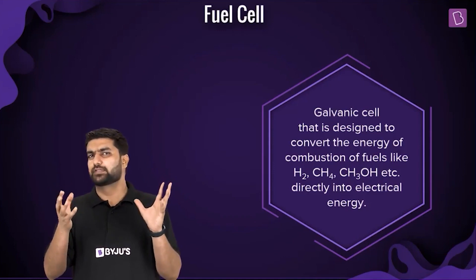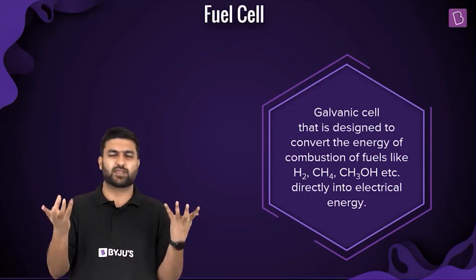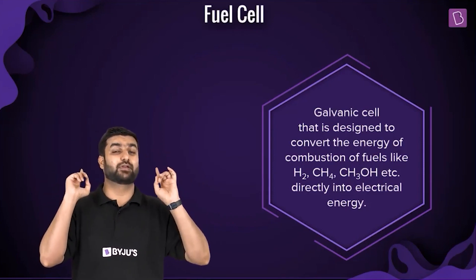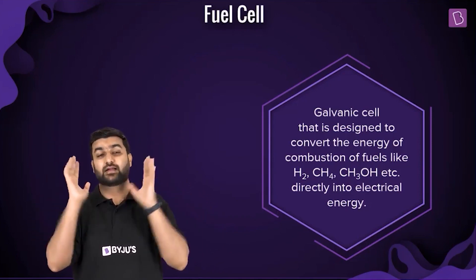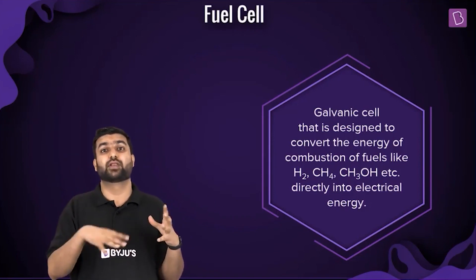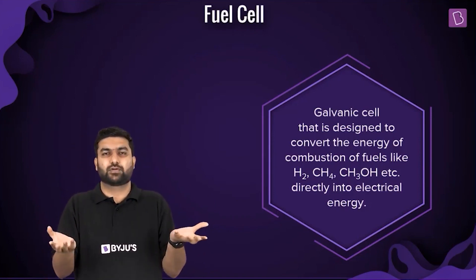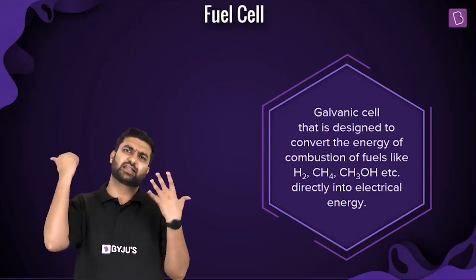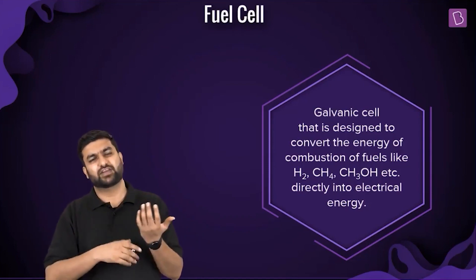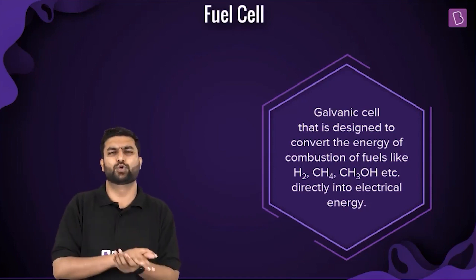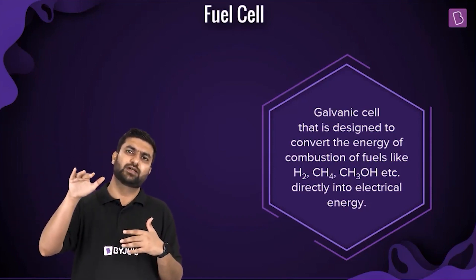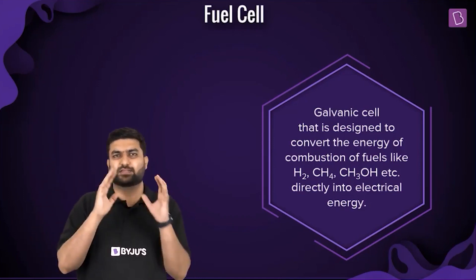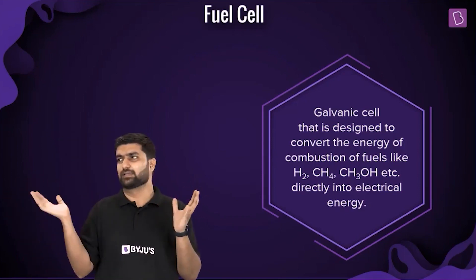In galvanic cells, there are electrodes, electrolytes, and substances that keep getting consumed. Remember the Daniel cell — a type of galvanic cell — where zinc was getting consumed becoming Zn²⁺, and Cu²⁺ ions were getting consumed becoming copper solid. Over time, as ion concentrations change, the EMF of the cell starts to reduce, eventually reaching a point where the cell can no longer work.